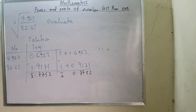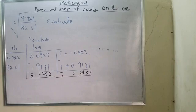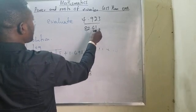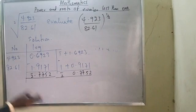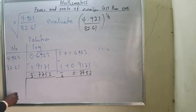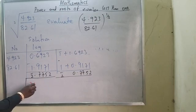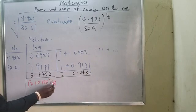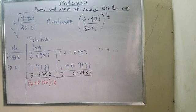Don't forget the answer will be divided by 3 because we have the cube root. I can write the whole thing as: log of (4.923 divided by 2.61) all over 3. So everything I have will be divided by 3. I can write this as (bar 2 plus 0.7752) all divided by 3.